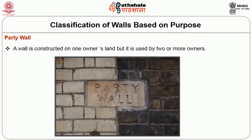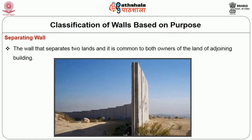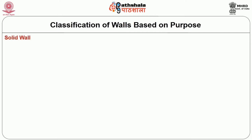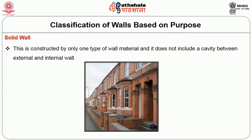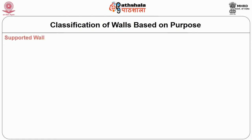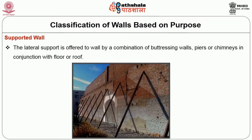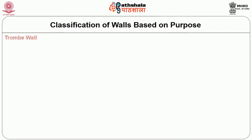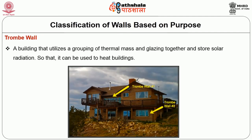Party wall — a wall constructed on one owner's land but used by two or more owners. Separating wall — a wall that separates two lands and is common to both owners of adjoining buildings. Solid wall — constructed by only one type of wall material, not including a cavity between external and internal wall. Supported wall — lateral support offered by a combination of buttressing walls, piers or chimneys in conjunction with floors or roofs. Trombe wall — a building element that utilizes thermal mass and glazing together to store solar radiation to heat buildings.